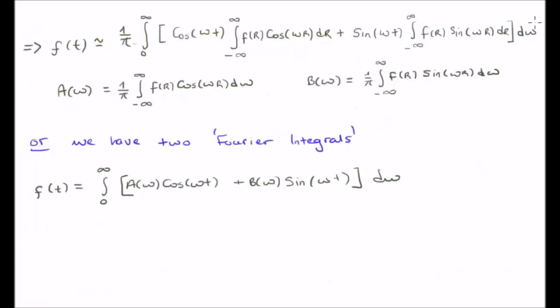Putting it all together, we have this particular expression here on the top of your screen. And if we make these two definitions of a of omega and b of omega, we can rewrite it in the following term in the middle of your screen. We speak of having Fourier integrals.